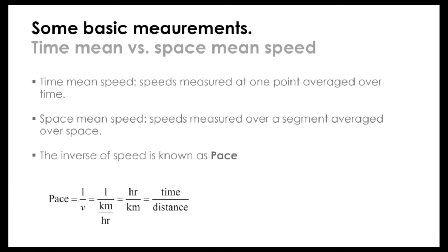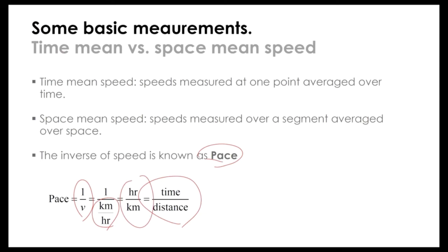Time mean speed is measured at one point averaged over time, while space mean speed is measured over a segment averaged over space. There's also a term called pace, which is the inverse of average speed. Since speed has units of km/h, pace has units of hours per kilometer — it's simply time over distance.